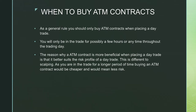The reason I buy at the money contracts when day trading is because it better suits the risk profile of a day trade. This is different to scalping, for instance, as you are in the trade for a longer period of time. Buying an at the money contract is cheaper and less risky than buying in the money. As I mentioned in the previous video, in the money contracts have higher deltas. At the money contracts don't have as high a delta, but that allows you to stay in the trade throughout the day. If you were buying an in the money contract on a day trade and the underlying stock price went against you, you would lose money quicker — at a faster rate because of the delta. Buying an at the money contract allows you to ride through those corrections during the day for the bigger move.